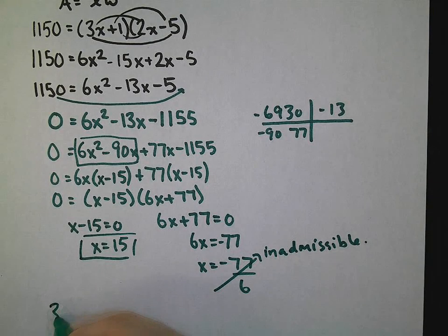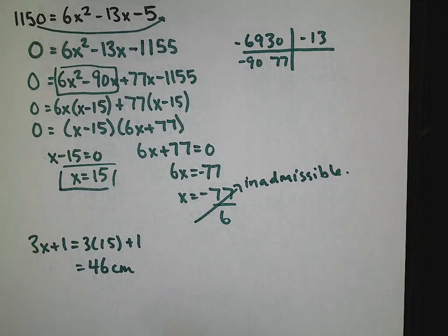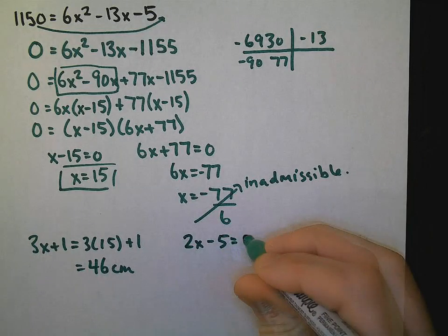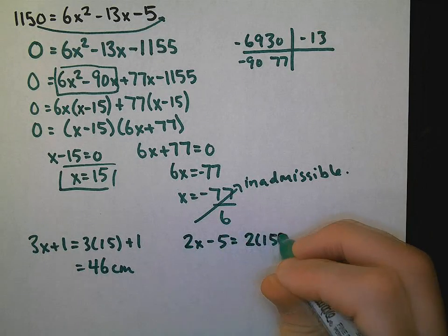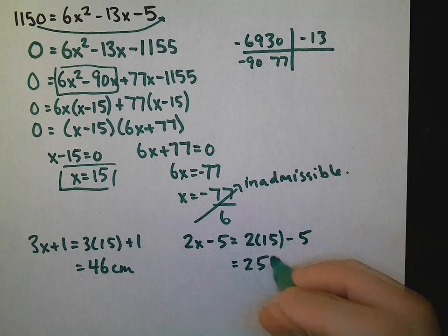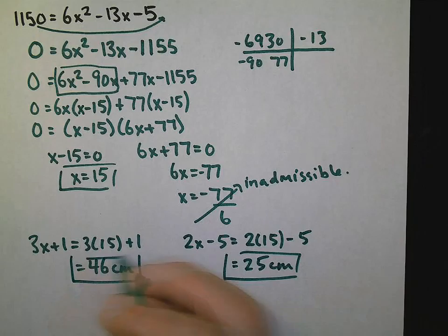Since we have one dimension of 3x + 1, we can take that 15 and substitute it in to get a length of 46 centimeters. Your other dimension was 2x - 5. So that would be 2 multiplied by 15 minus 5, which is 25 centimeters. There are your dimensions of your rectangle.